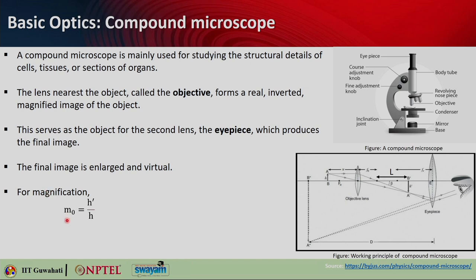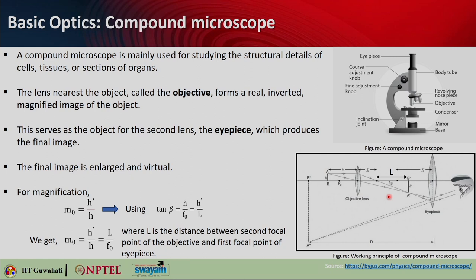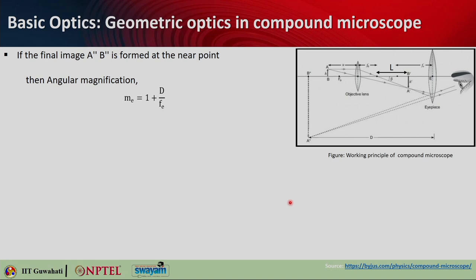For magnification, the magnification factor for the objective lens is m_o = h'/h. Using the angle beta, tan(beta) = h/f_0, where f_0 is the focal length. l is the distance between the second focal point of the objective and the first focal point of the eyepiece. So m_o = l/f_0. The eyepiece also has a magnification factor m_e = 1 + d/f_e. The total magnification when the image is formed at infinity is M = m_o × m_e = (l/f_0) × (d/f_e).